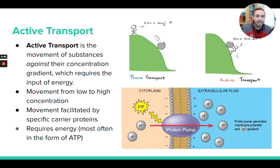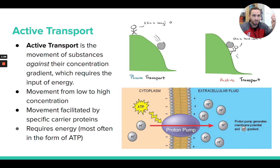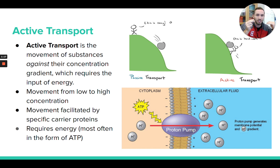There's going to be an input of energy that needs to be met in order for this movement to take place. In active transport, what we're going to do is move substances against their concentration gradient, not along their concentration gradient. In passive transport, substances were moving down their concentration gradient from high to low concentrated areas, getting closer to equilibrium. But in active transport, solutes are actually moving against their gradient — from areas of low solute concentration.